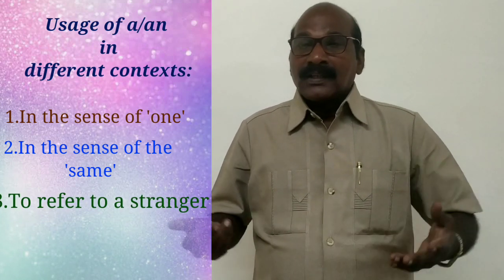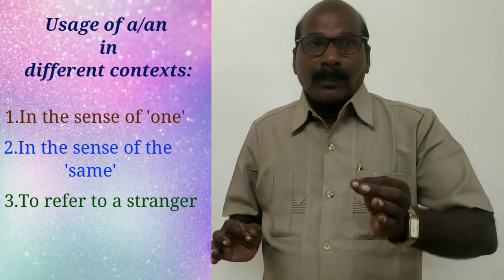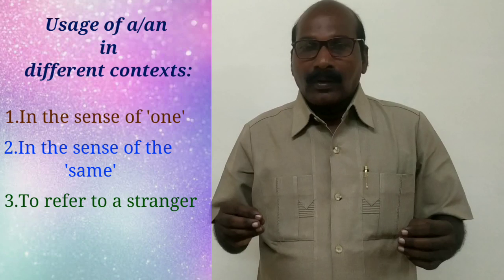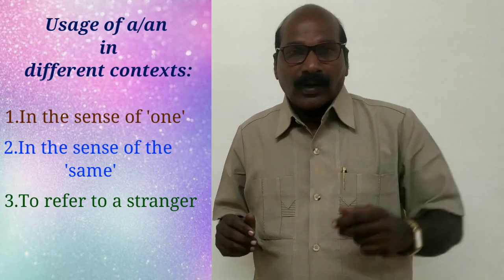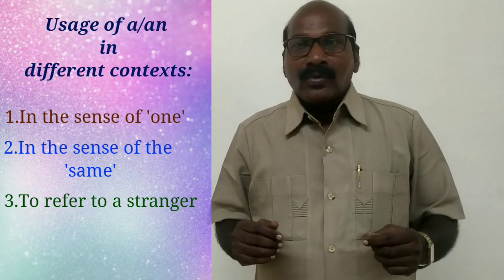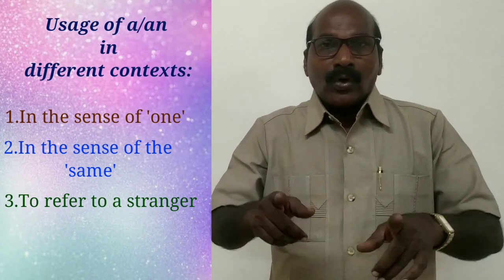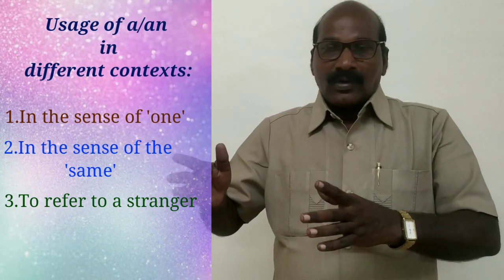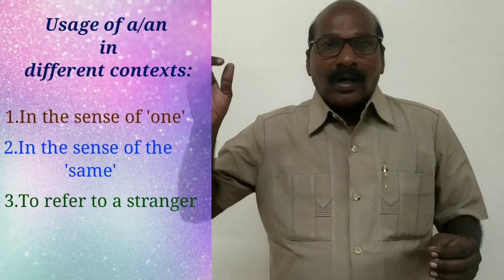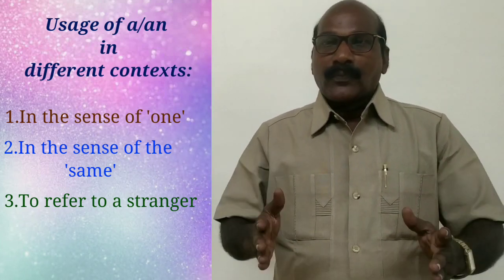The third point is: we use the indefinite article before a proper noun to refer to a stranger. For example, 'A Mr. Ravi has come for you.' When we say 'a Mr. Ravi,' we understand that Ravi is unknown to you — you know only his name. When you know who the person is, you simply say 'Ravi has come for you.'